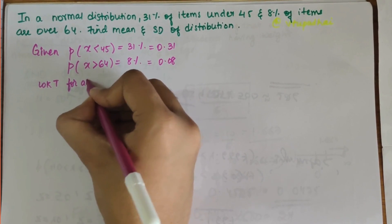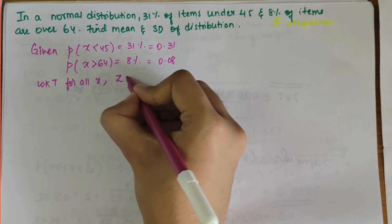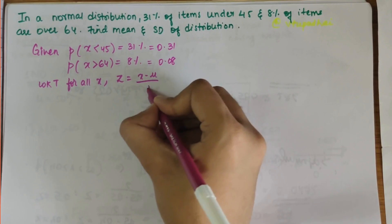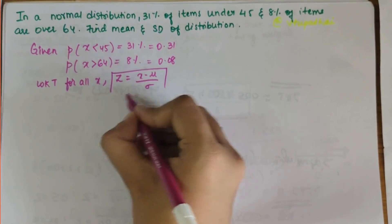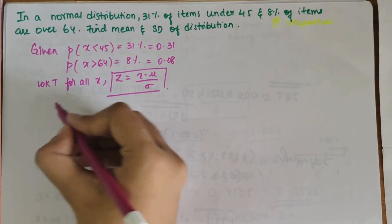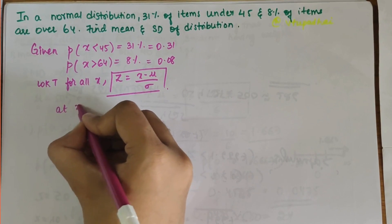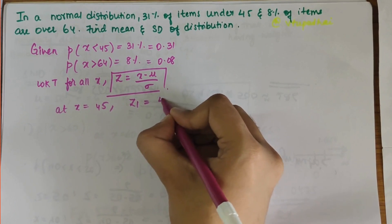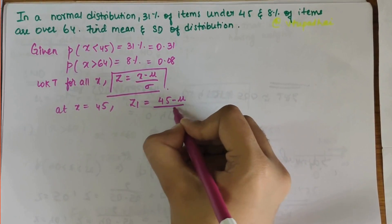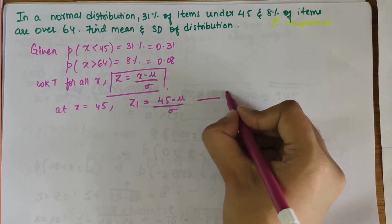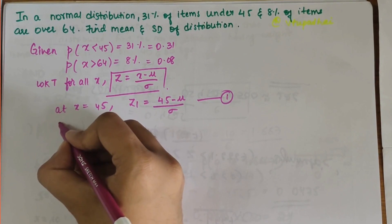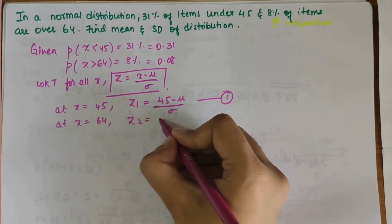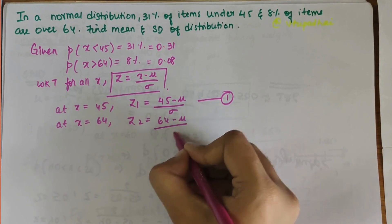We all know that for all values of X, the standard normal variate Z is equal to (X - μ)/σ. At X = 45, we get Z1 = (45 - μ)/σ, so this is our first equation. At X = 64, we get Z2 = (64 - μ)/σ, this is our second equation.